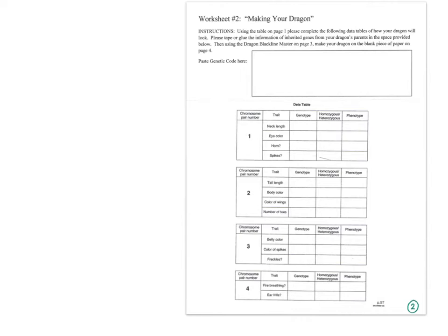Once you're done with everything, you can go ahead and write out your entire genome. You can do it in several ways — for example, chromosome one, and then write out the alleles. I'm going to make some letters up because I don't want to pull in the chart from the first page. You can say big T, little t, big A, little a, big W, little w, Z, Z — and that could take care of your first chromosome and your second chromosome.